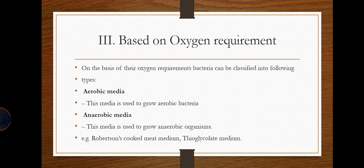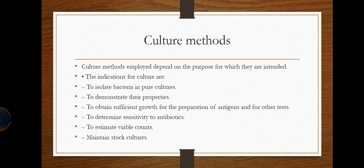Classification based on oxygen requirements gives us aerobic media, used to grow aerobic bacteria, and anaerobic media, used to grow anaerobic organisms. Each should contain those nutrients that the respective organism uses for growth. Examples of anaerobic media include Robertson's cooked meat media and thioglycollate media.